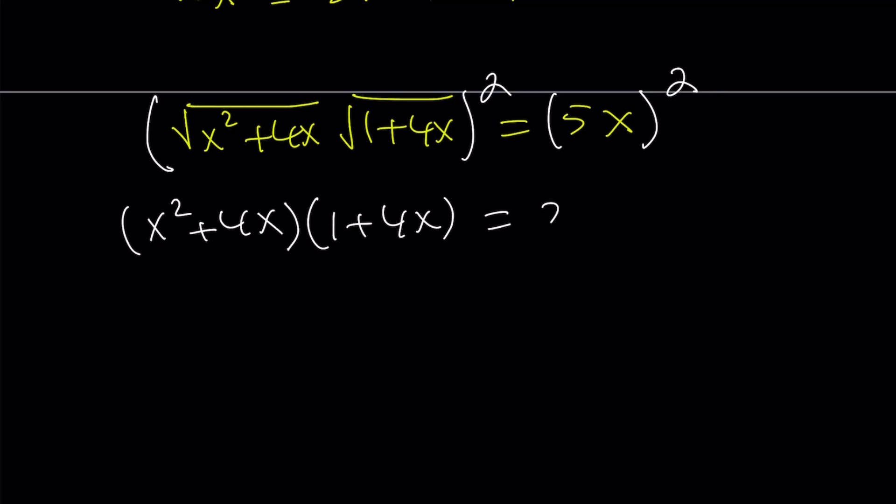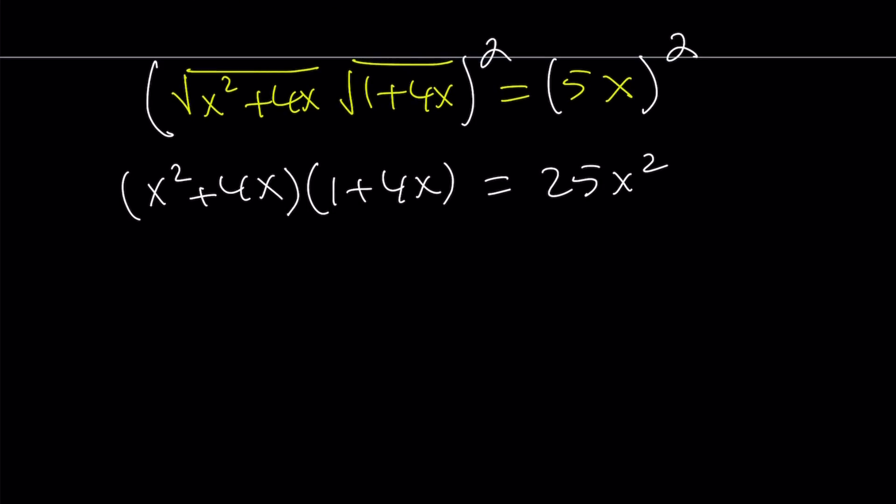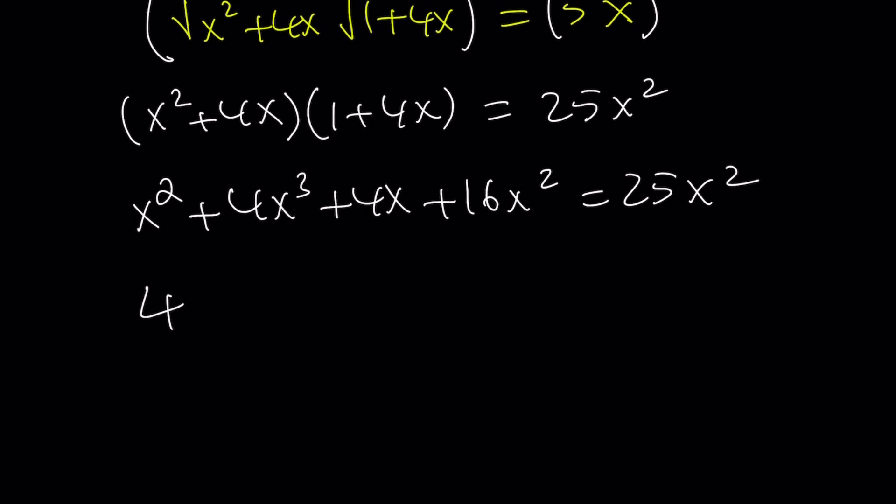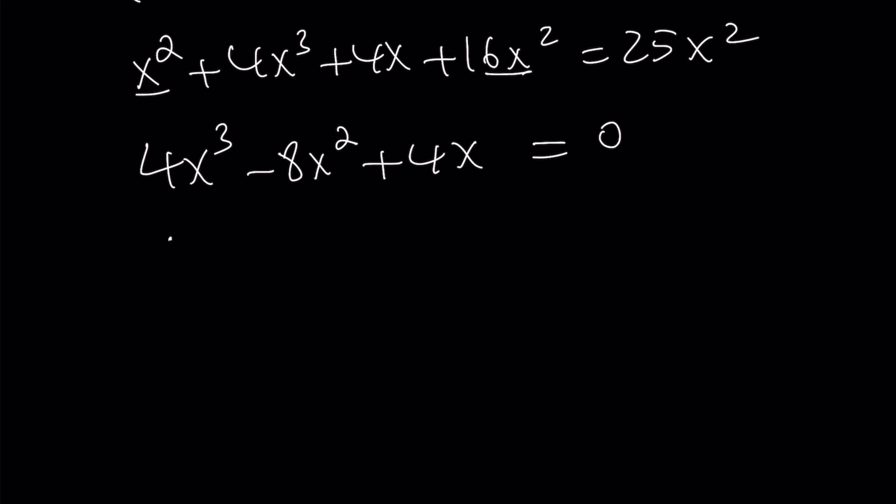And the right-hand side is going to be 25x squared. So, it's not super bad. Let's go ahead and distribute it. x squared plus 4x cubed plus 4x plus 16x squared equals 25x squared. Now, I have x cubed. So, let's go ahead and put that first. And then bring the 25x squared over here. But I have x squared plus 16x squared. That's going to be 17 minus 25. That's going to be a negative 8x squared. And then plus 4x equals 0. Guess what? This is factorable. We can take out 4x. And the rest is going to be a piece of cake.